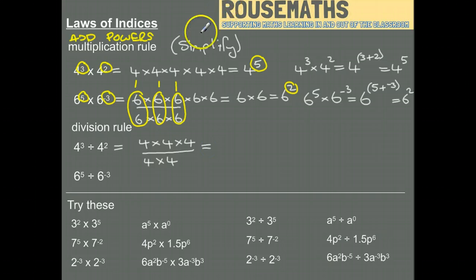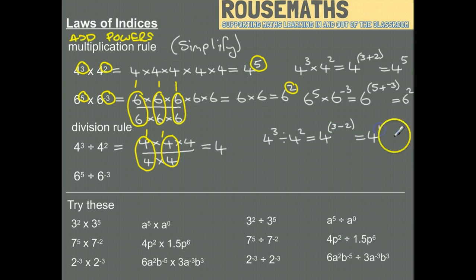That means we've got 1 times 1 times 4. That's just coming out as 4, or if you like, 4 to the power of 1. So if we're dividing powers, what you can see is that we're doing the first power take away the second, and that's how we get our 4 to the power of 1, which is 4.